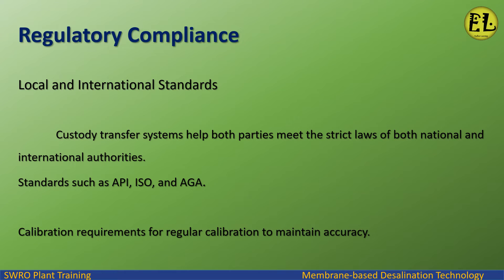Regulatory Compliance: local and international standards. Custody transfer systems help both parties meet the strict laws of both national and international authorities. Standards such as API, ISO, and AGA define calibration requirements for regular calibration to maintain accuracy.